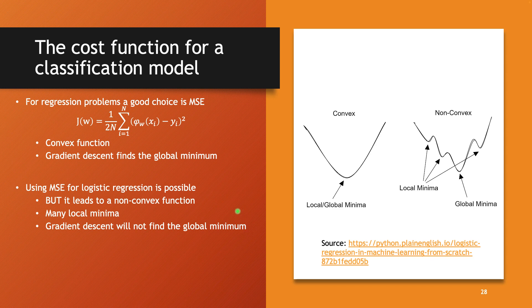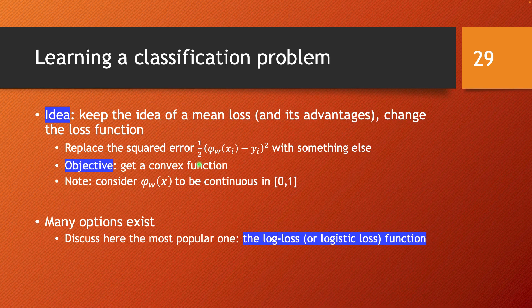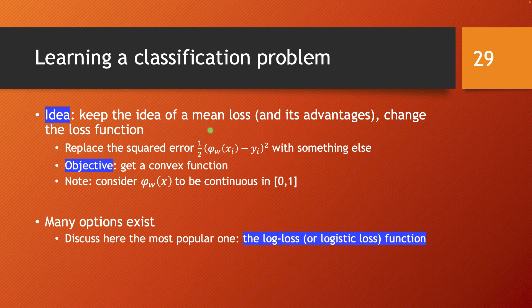That's the problem with this particular function. But the idea is that maybe we can change a little bit in this loss function — for example, keep the idea of a mean loss, which has its advantages since it allows you to compare losses between datasets regardless of their size. So the mean loss per data point is good, but maybe we should just change the main term in the loss function — specifically, replace the squared error with something else.